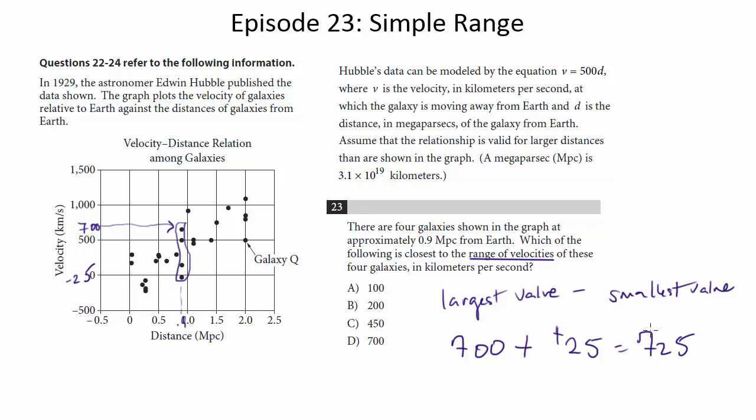We get 725. So which choice is closest to that? The closest one is D. Again, we had to approximate our values here to get 700 and negative 25, so we're not going to get the answer exactly, but the closest choice here is D.